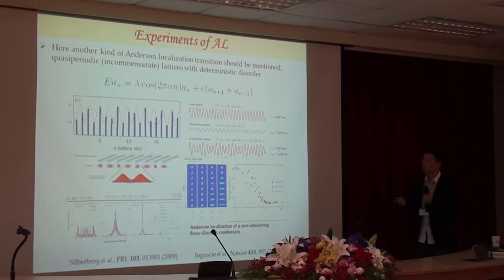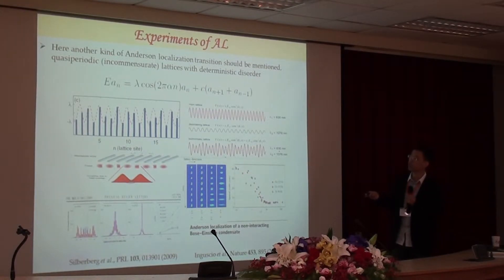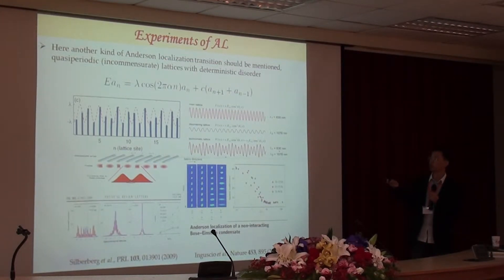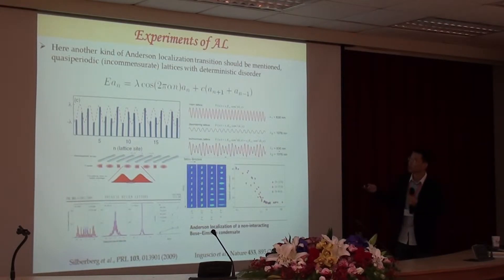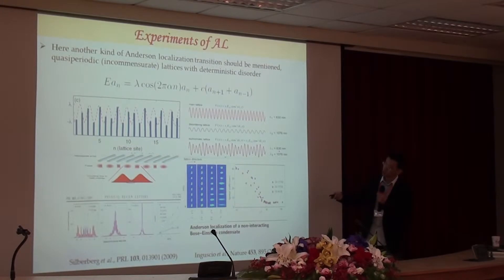This model has been experimentally realized. One group used a laser-written waveguide array to fabricate a photonic lattice and directly observed the transition of light waves. Another group from Florence used cold atoms captured in two laser beams with different incommensurate frequencies, realizing the Aubry-André model and also observing the localization-to-delocalization transition.